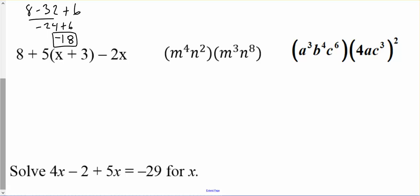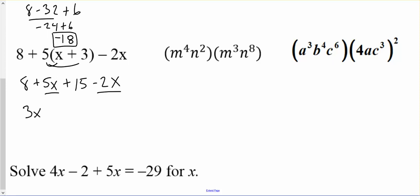We're trying to simplify, so let's distribute. We get 8 plus 5x plus 15 minus 2x. Since we have no equal sign, we're just simplifying. 5x and negative 2x makes 3x, and 8 and 15 make 23.